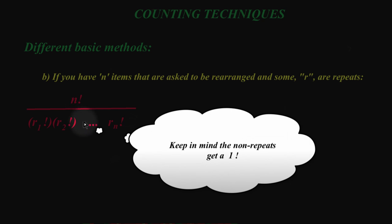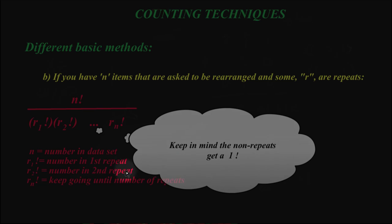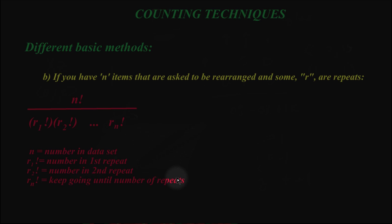The sum of the repeats in the denominator must add up to the total factorial. So if you've got 10 factorial up here, you better have a total of 10 factorial down here. N is the number in your data set. R1 would be the first number repeated. R2 is the second number, and you keep doing the repeats until you're done.